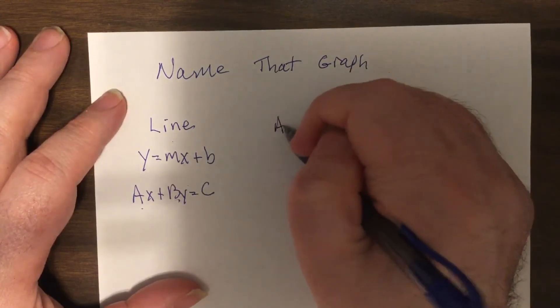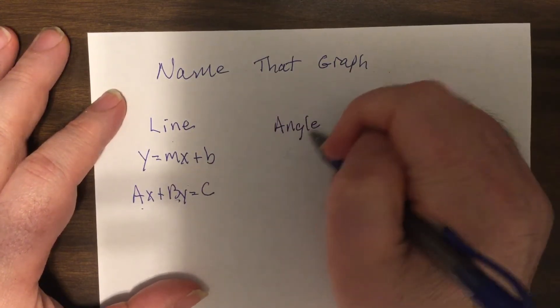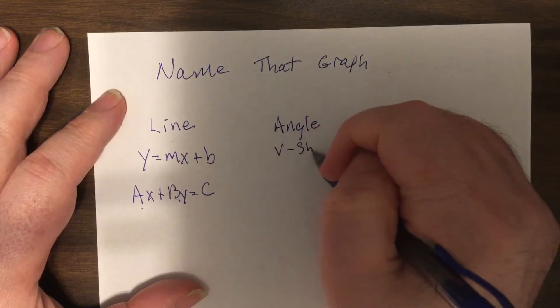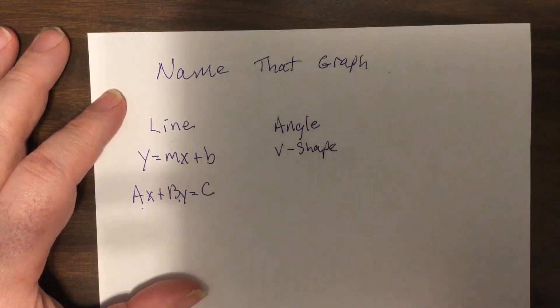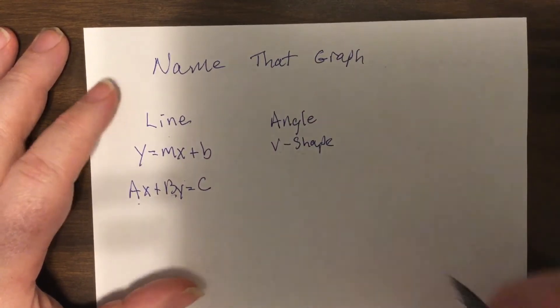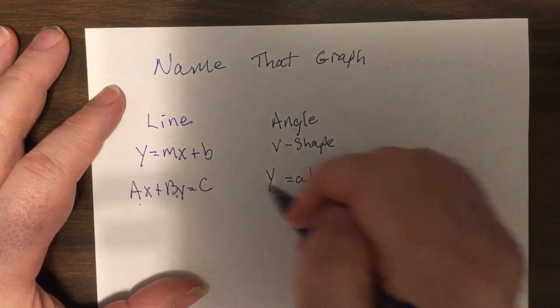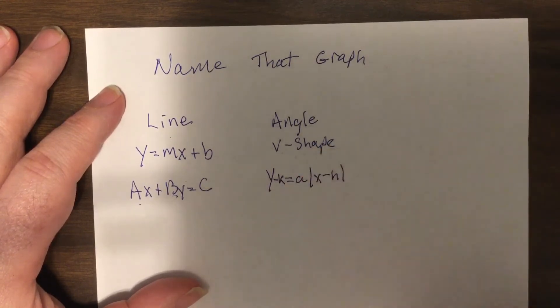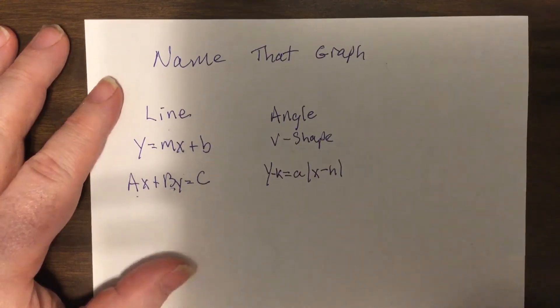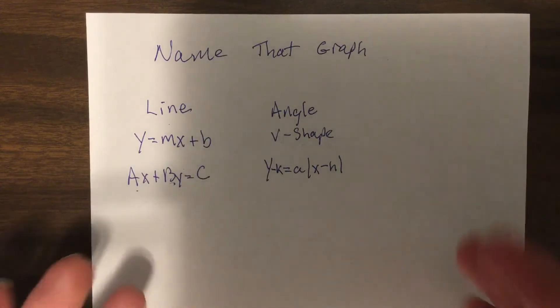Then we got the angle, or v-shape, either way I'll take it. And now when you should know, v-shape, you got the absolute value. That should be easy, absolute value.